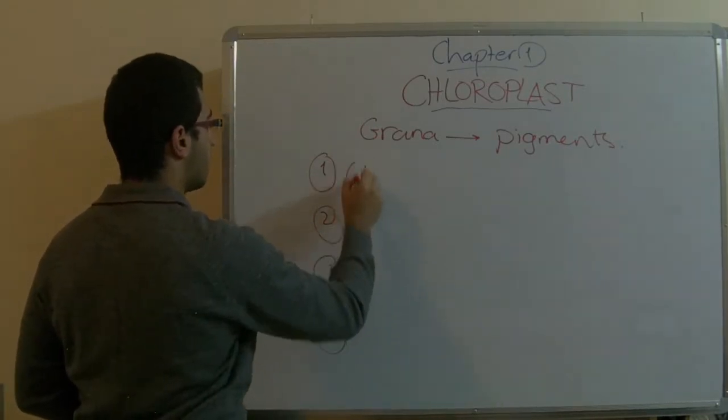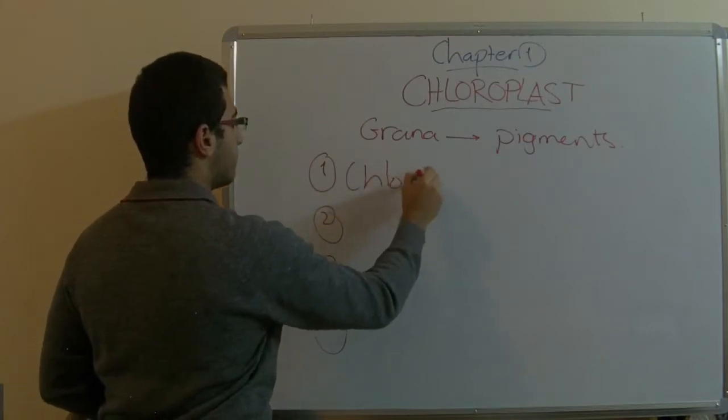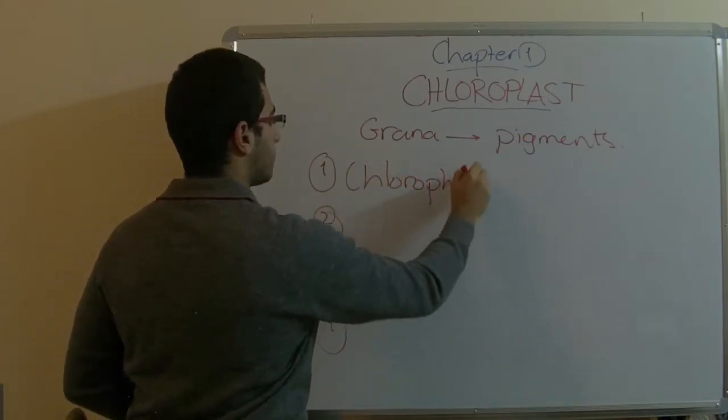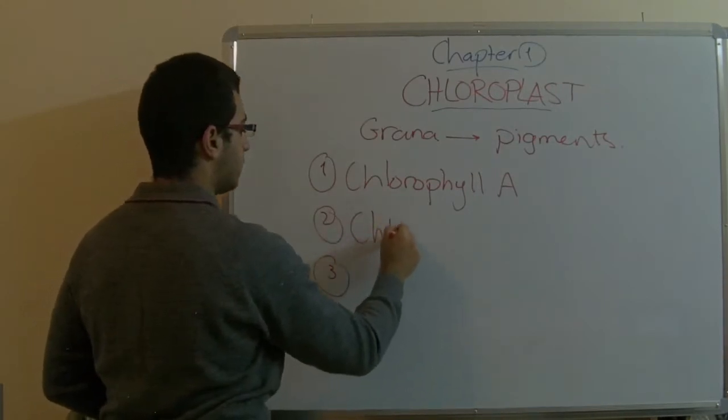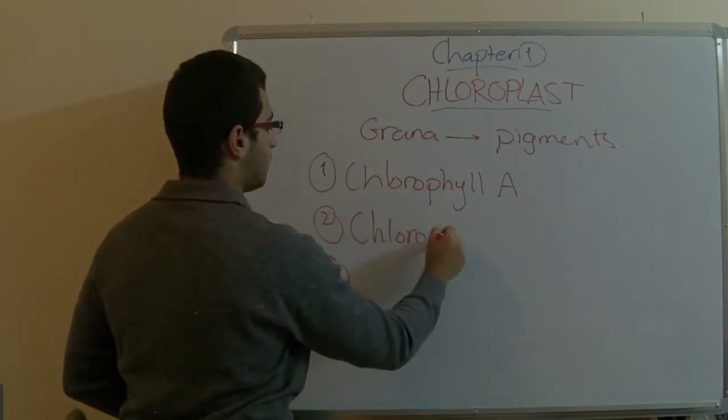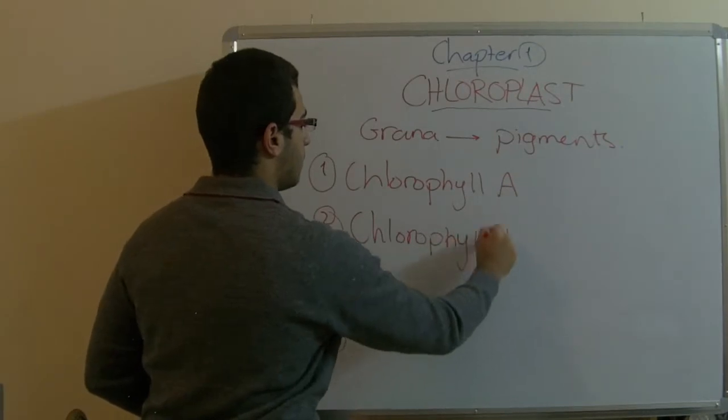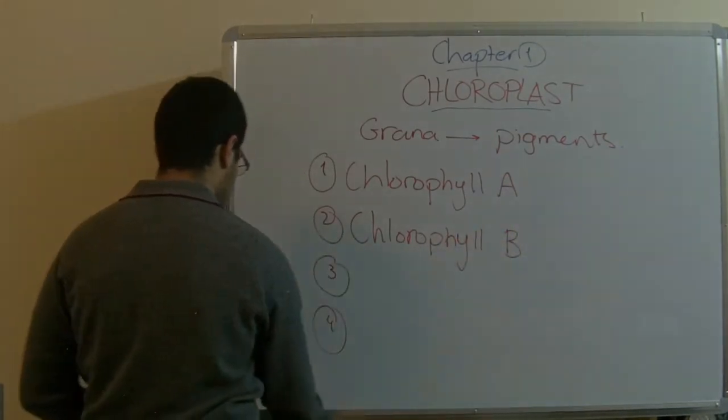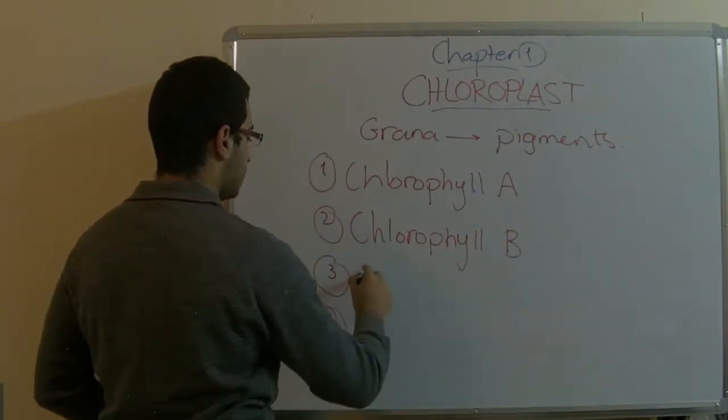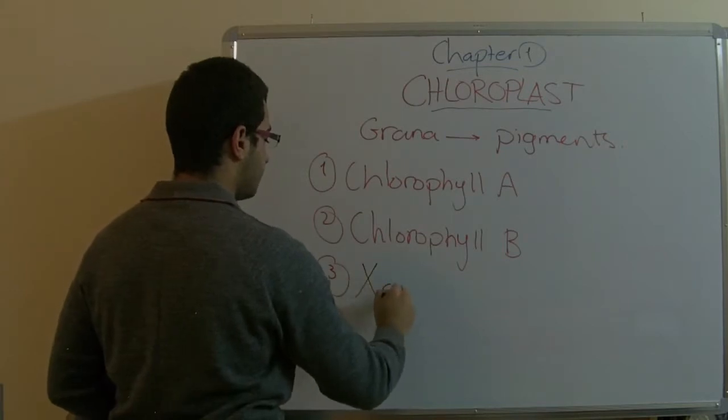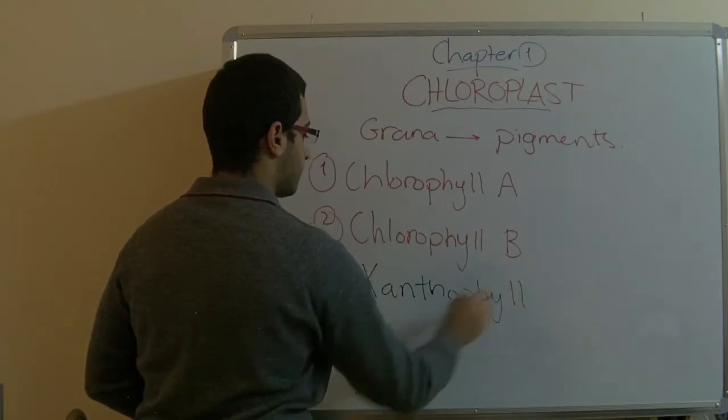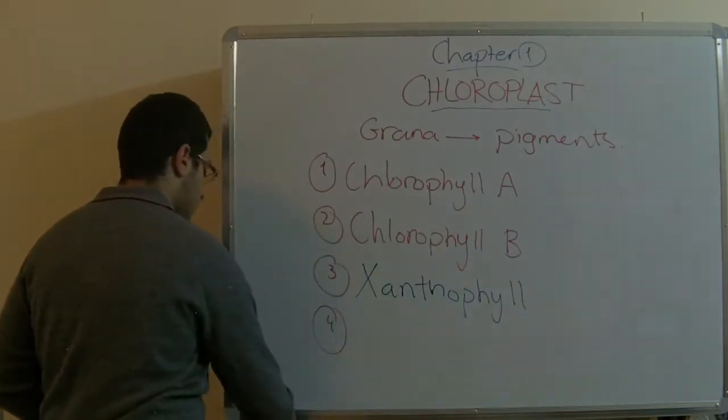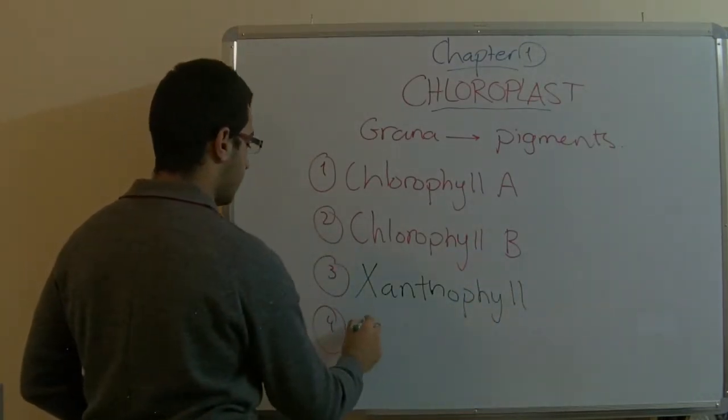We have chlorophyll A, we have chlorophyll B, we have xanthophyll, and we have carotene.